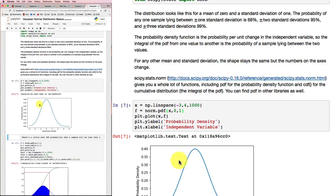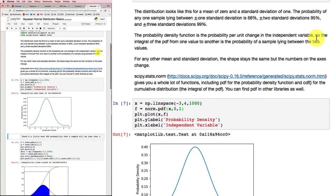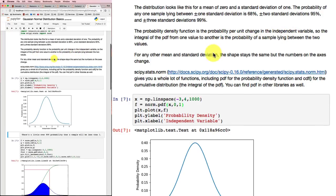Now, the PDF function, this thing that we've plotted, gives us probability density. And probability density is defined as the probability per unit change in the independent variable. So that the integral of that probability density function from one value to another is the probability of a sample lying between those two values.